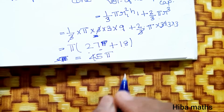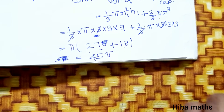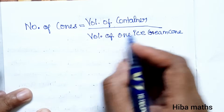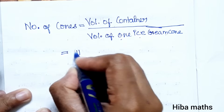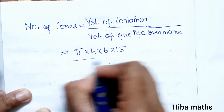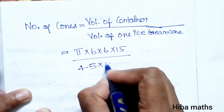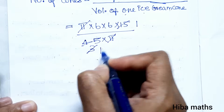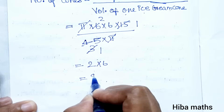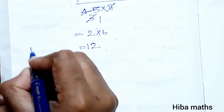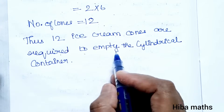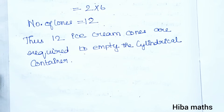Volume of container divided by volume of 1 ice cream cone: π × 6 × 6 × 15 divided by 45π. Pi cancels, and simplifying: 6 × 6 × 15 / 45 = 12. Number of cones = 12. Therefore, 12 cones are required to empty the cylindrical container. Thank you so much for watching.